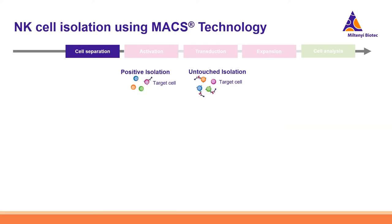However, looking at the possible strategies we offer, there are two ways to isolate NK cells: positive magnetic isolation or untouched isolation. Most of you know Miltenyi Biotech from the MACS technology — the magnetic separation of cell subsets.